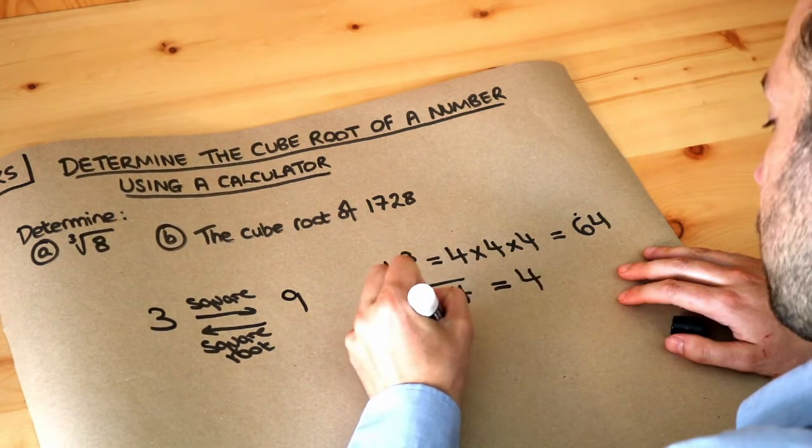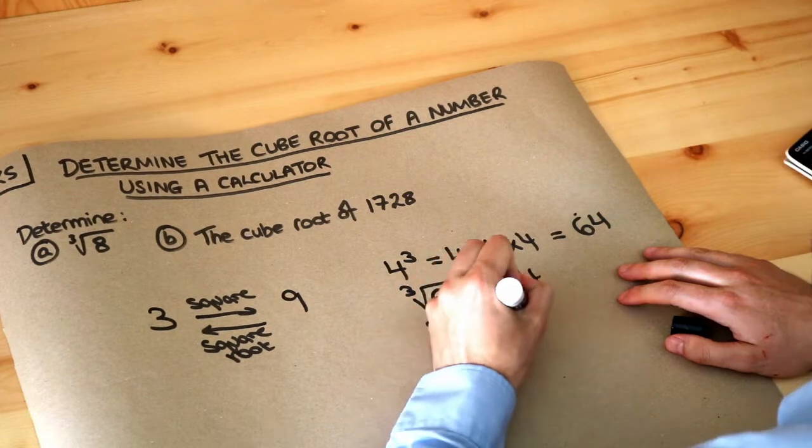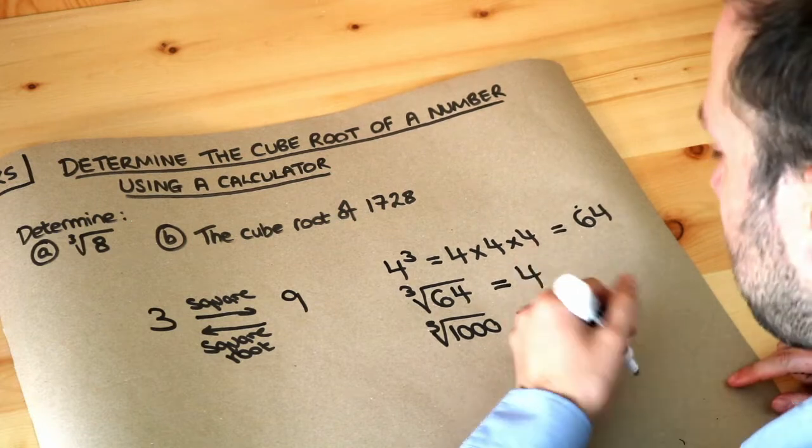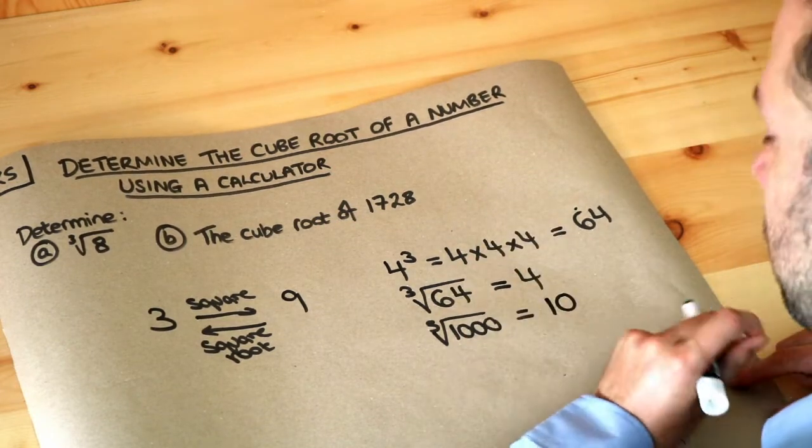If I wrote the cube root of 1000, what number cubed gave you 1000? Well, 10 cubed gives you 1000. 10 times 10 times 10 is 1000, so the answer would be 10.